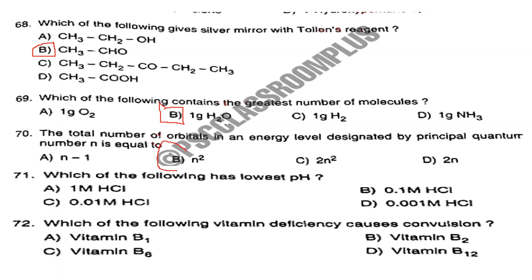Question number 71. Which of the following has the lowest pH? Answer is Option A: 1 molar HCl. Question number 72. Which vitamin deficiency causes convulsion? The answer is Option C: Vitamin B6.